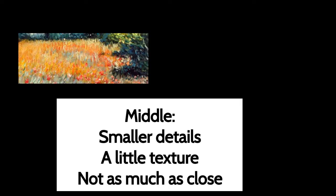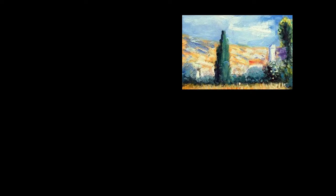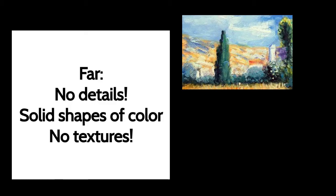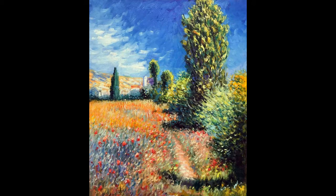If you guessed this was the middle — good job! In this part we see some details, but they are smaller. We see just a little texture and not as much texture or details as the close part. Last but not least, this was the far part. As you can see with the tree, there are really no details — just solid shapes of color, light on one side and dark on the other side, with not really any texture. Especially look at the blue sky; it's basically one color of blue. Putting it all back together, you can see how the amount of detail gets less as we go farther away in this painting by Monet.